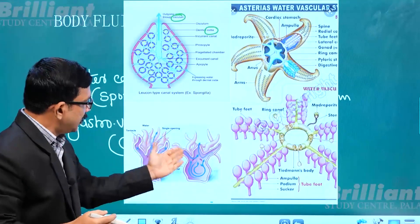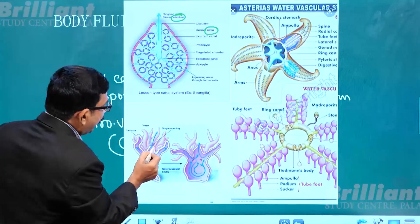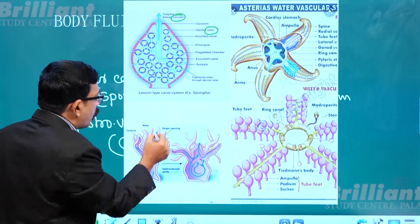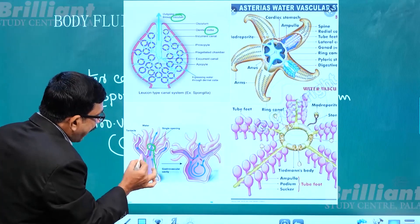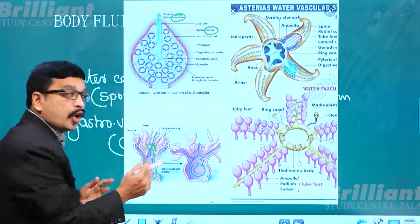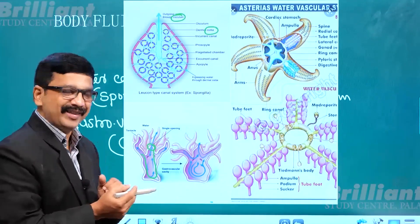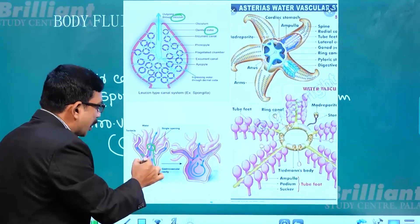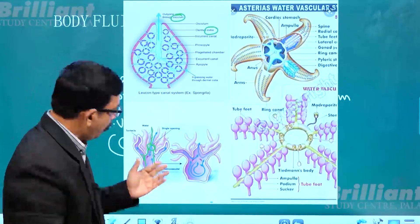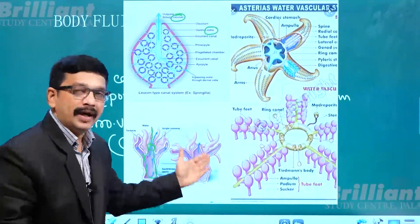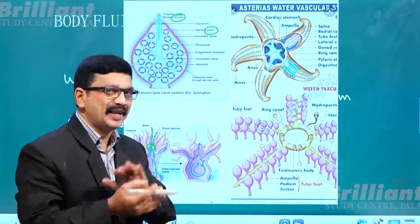Next is a cnidarian animal — for example, hydra. In hydra, water enters the body through the mouth and then circulates through a cavity called the gastro-vascular cavity or coelenteron. That water flows through the coelenteron and finally exits through the same opening. This is called the gastro-vascular system, the transporting system found in the cnidarian group.